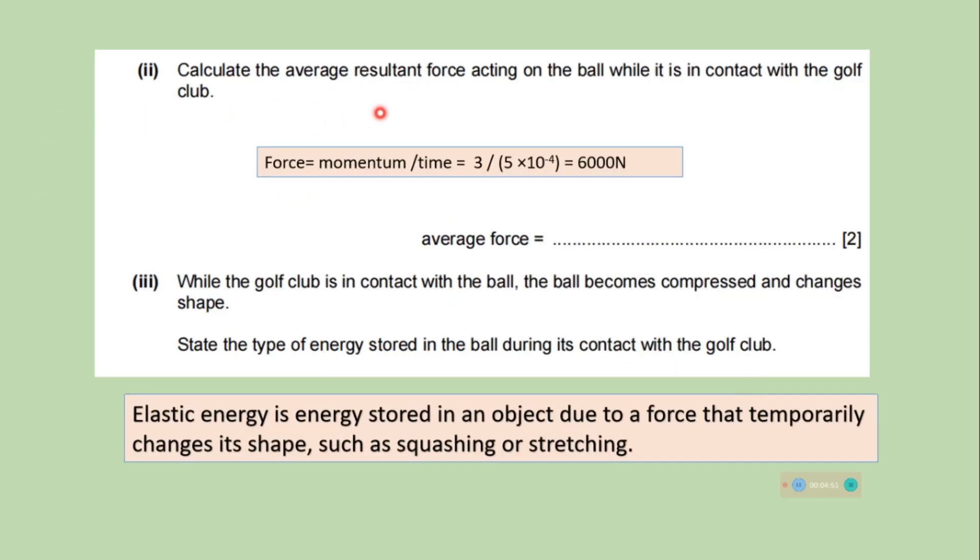Calculate the average resultant force acting on the ball while it is in contact with the golf club. We know that force is equal to momentum divided by time. Rate of change of momentum is force. So we have everything, momentum we have and time we have, so we can calculate force. Force is 6000 Newton.